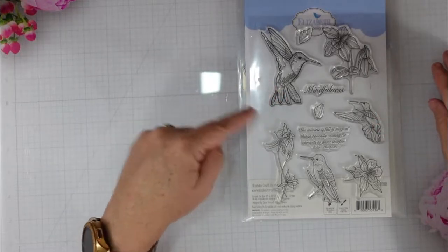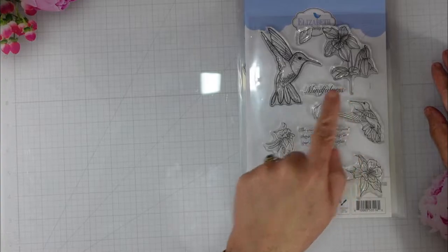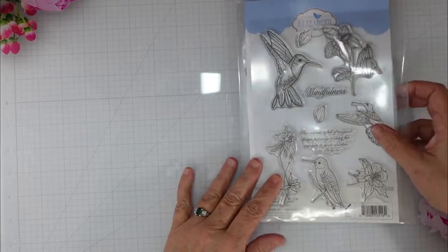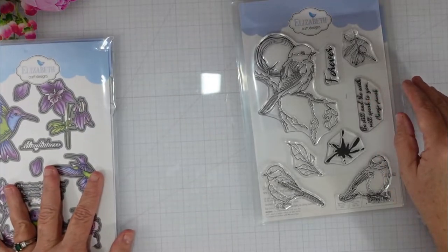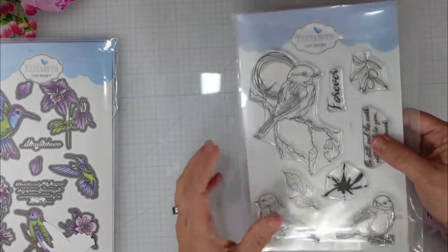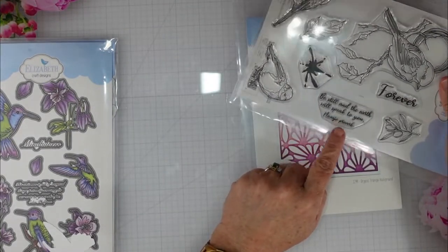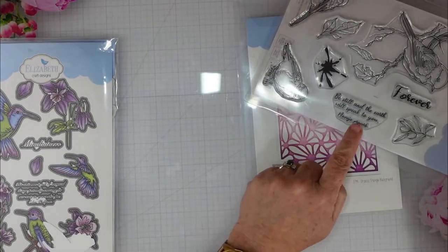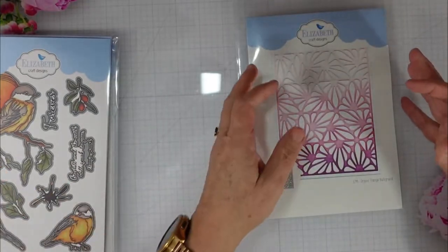The Beautiful Blooms collection has several different florals that are available. This one is called Mindfulness. There are three flowers and three different hummingbirds, two sentiments. I want to mention that the dies, which I do have the coordinating dies, also cut out the sentiment. So for all of the Beautiful Blooms collections there are dies for the sentiments.